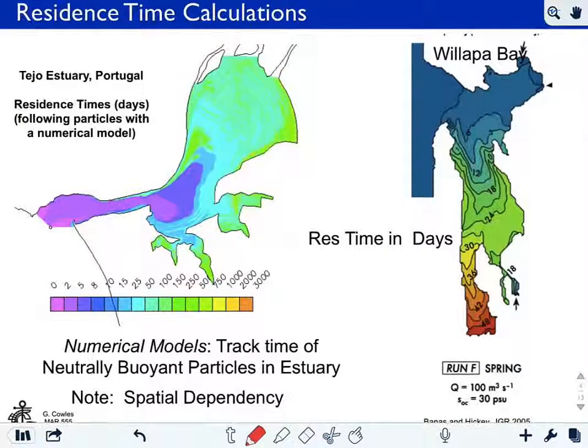Here are some examples of residence time calculations. Here's one in Portugal where they run a circulation model which mimics the circulation in this embayment. This is the opening, the ocean here. And they can estimate the residence time. Now it's spatially varying, such that in the upper portions of the estuary you have a longer residence time.